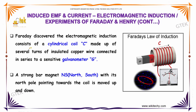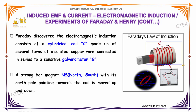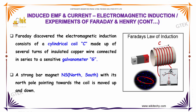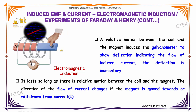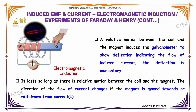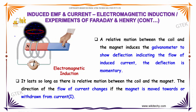The electromagnetic induction experiment consists of a cylindrical coil C made up of several turns of insulated copper wire, which is connected in series with a galvanometer. A strong bar magnet with its north pole pointing towards the coil is moved up and down. A relative motion between the coil and the magnet induces a current in the galvanometer, which shows a deflection indicating the flow of induced current. It lasts so long as there is a relative motion between the coil and the magnet.